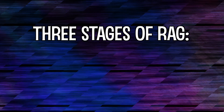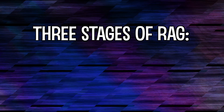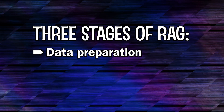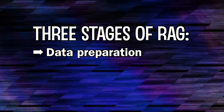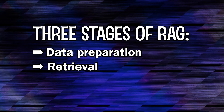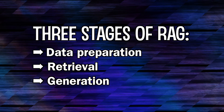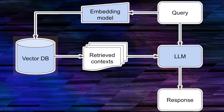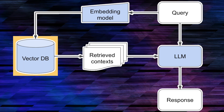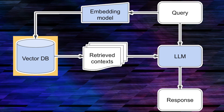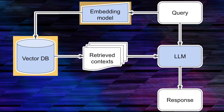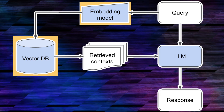RAG operates in three stages: data preparation, retrieval, and generation. Data preparation usually involves putting data into a vector database, where it's turned into embeddings.